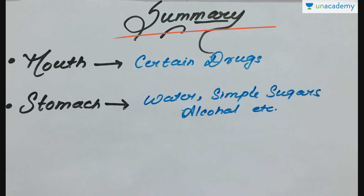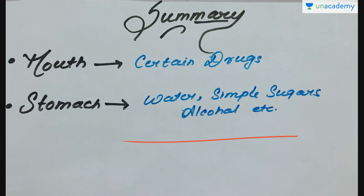Starting with the mouth: certain drugs that come into contact with the mucosa of the mouth and the underside of the tongue are absorbed into the blood capillaries lining them. In the stomach, absorption of water, simple sugars, and alcohol takes place.